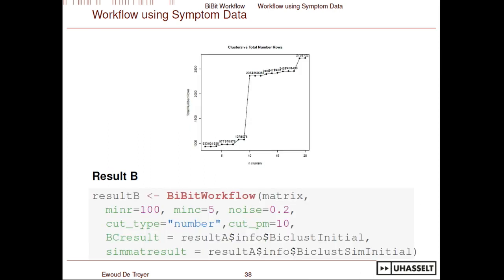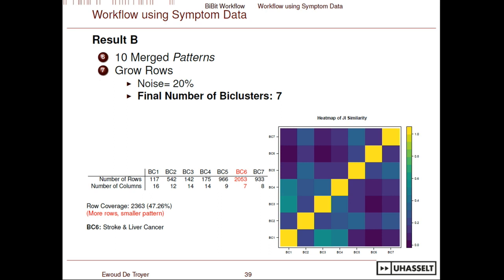With ten clusters, wanting more row coverage so more patients fit the bi-clusters, you can feed the previously computed similarity matrix back into the function to avoid recomputing. We then get seven final bi-clusters — one extra bi-cluster to which a lot of patients are fitting. It's a smaller pattern because we've chosen more clusters, giving smaller patterns and more fitting rows. In this extra bi-cluster, two conditions involved people experiencing stroke or suffering from liver cancer — symptoms not appearing in any of the other bi-clusters.